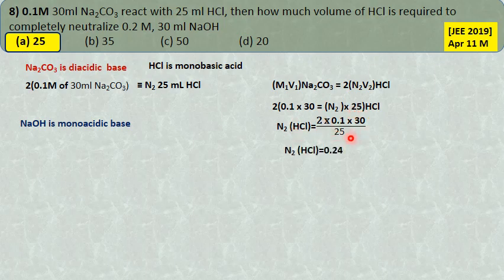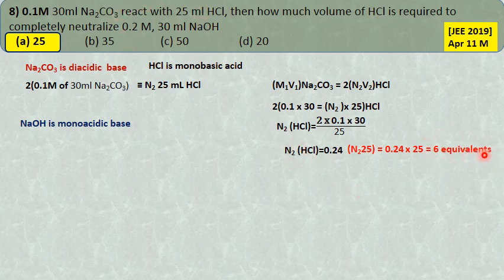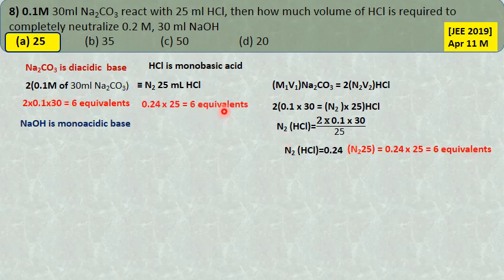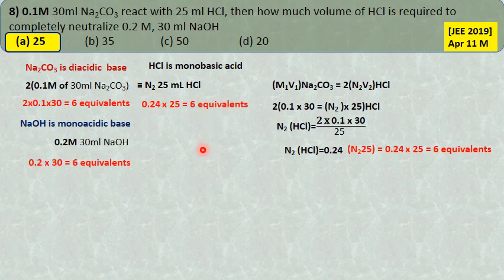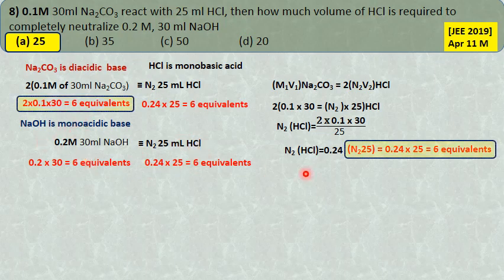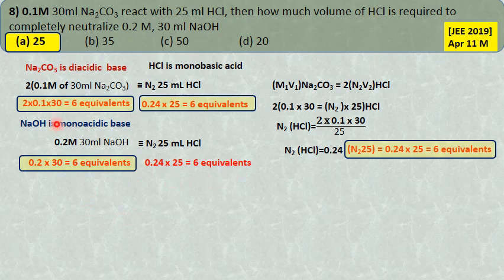Conventional calculation: normality of HCl = (2 × 0.1 × 30) / 25 = 0.24 normal. Both Na₂CO₃ and NaOH give 6 equivalents, and HCl gives 6 equivalents as well. The key point: number of equivalents of alkali must equal number of equivalents of acid on both sides for neutralization.